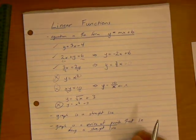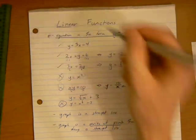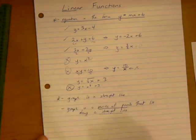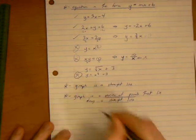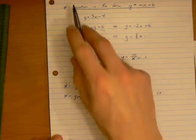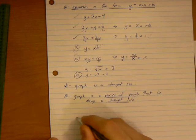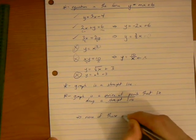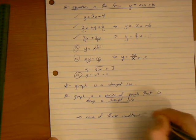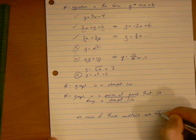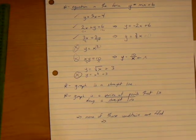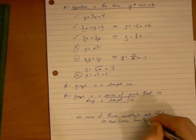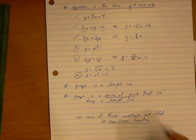So, three conditions for having a linear function. We can write the equation in that form, y equal to mx plus b. We can graph it as a straight line, or we can graph it as a series of points that lie along a straight line. If none of those three conditions are filled, that is not a linear function. So, we call it a non-linear function. And those we get into in higher level math classes.